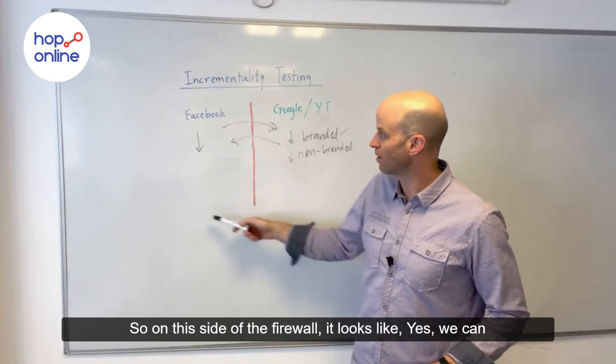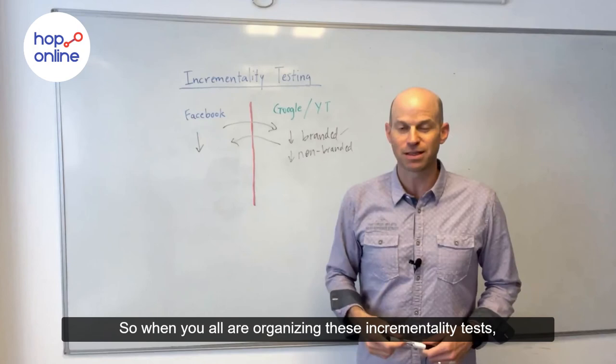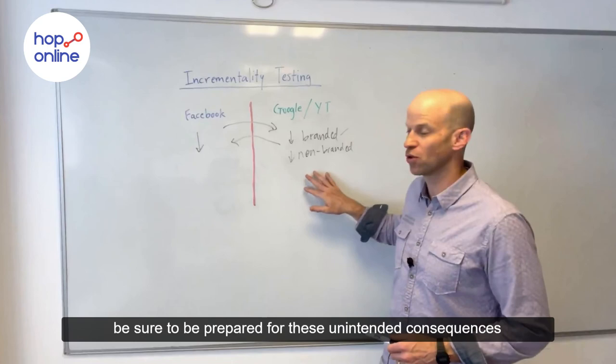And now this is happening much less because we're reducing the investment on Facebook. So on this side of the firewall it looks like yes, we can cut down on spend and still capture a lot of the conversions here — but we're paying a price on the Google side. So when you're organizing these incrementality or lift tests, you can learn a whole lot, but be prepared for these unintended consequences and the relationship between these two big channels across this firewall.